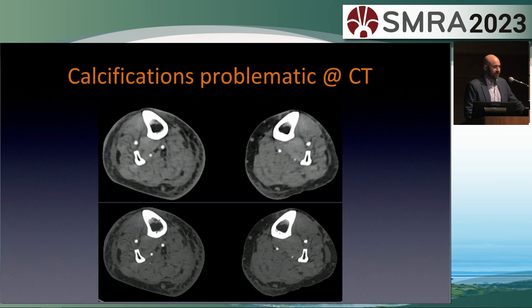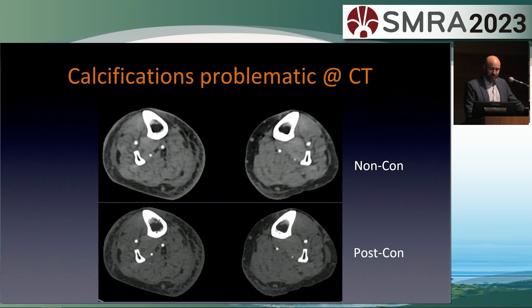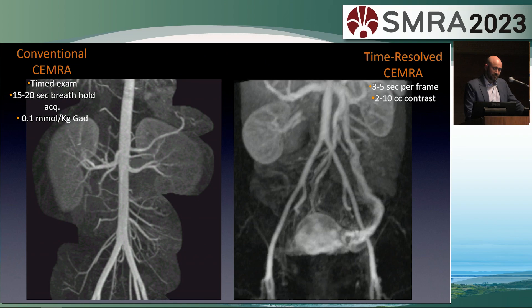In the lower extremities, one of two images is with contrast — try to figure out which one. The answers show one of the reasons MR is so useful. The same issues occur in the abdomen: very heavily calcified vessel origins are hard to see with both angiography and CT. Ultrasound has some of the same limitations, but MR doesn't have any of those issues.